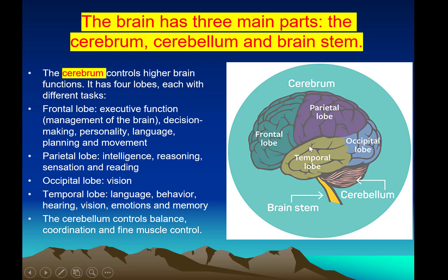The cerebrum controls higher brain function and has four lobes, each with different tasks: the frontal lobe for decision making, personality, language, planning, and movement; the parietal lobe for intelligence, reasoning, and sensation; the occipital lobe responsible for vision; and the temporal lobe for language, behavior, hearing, vision, emotion, and memory.